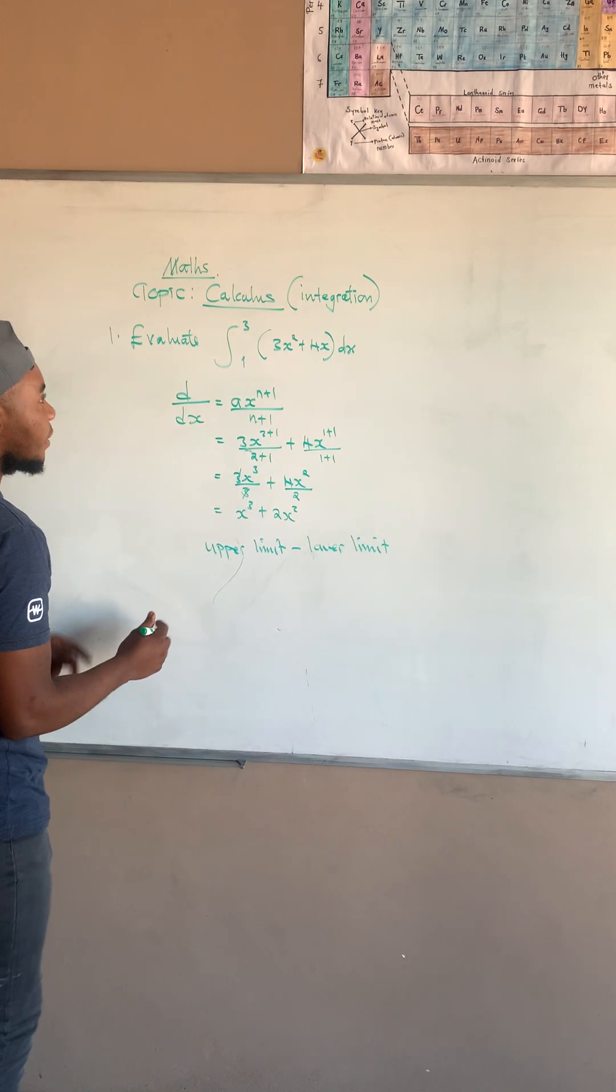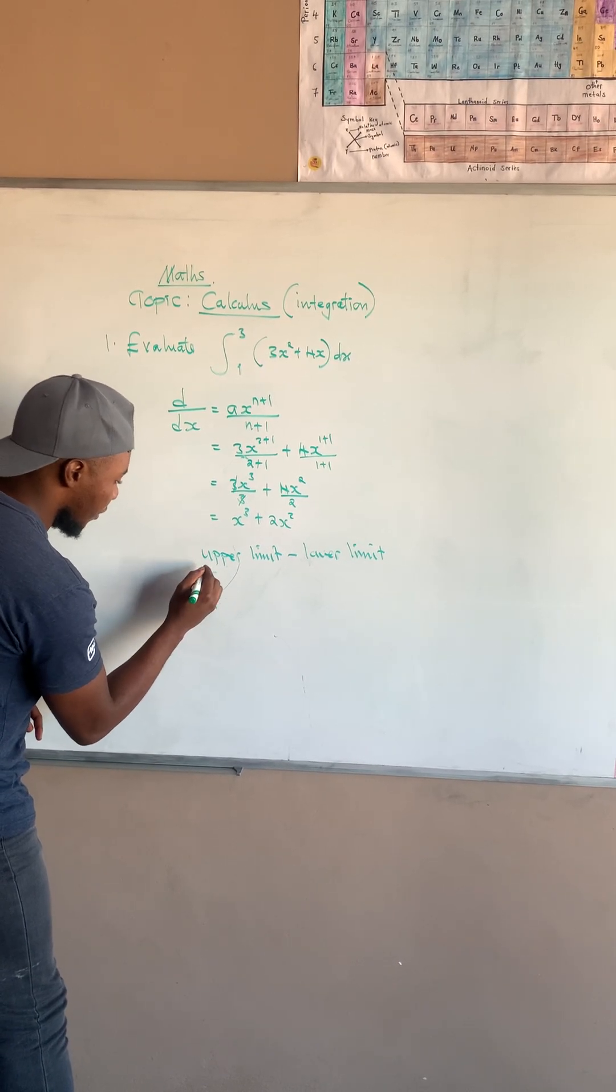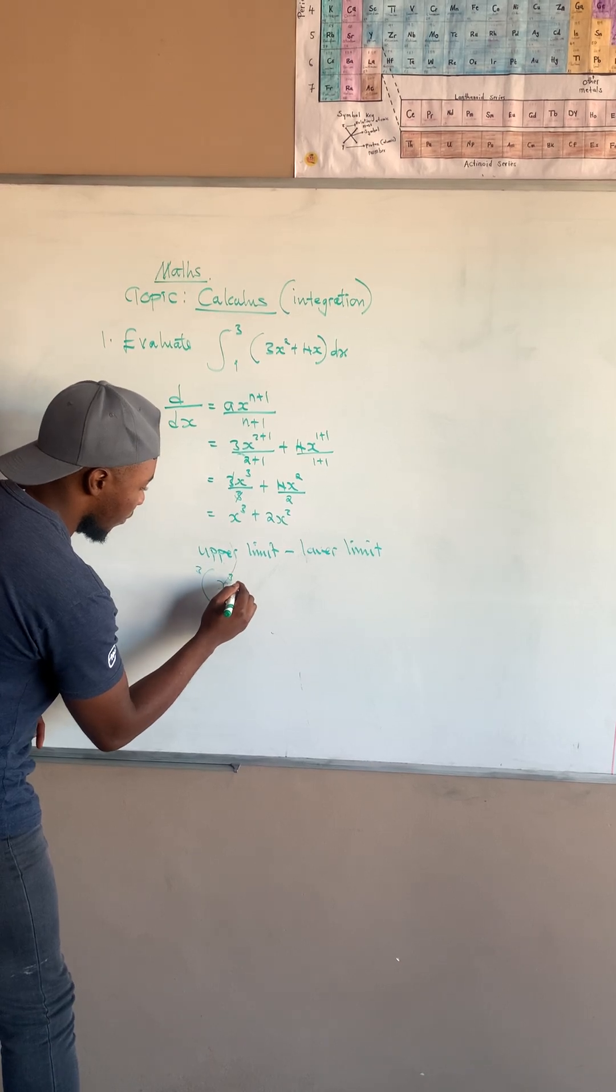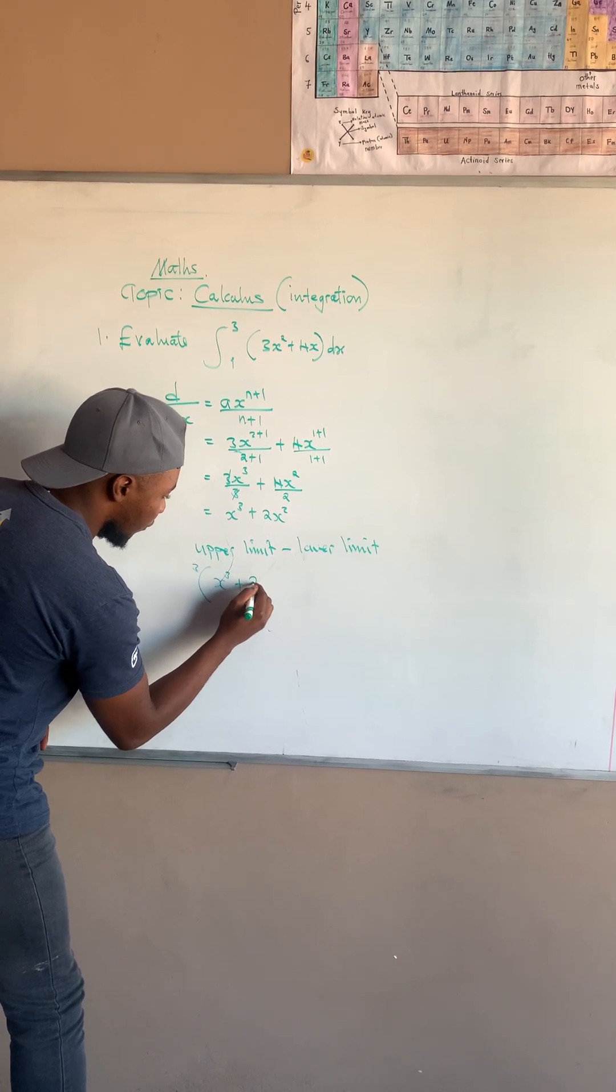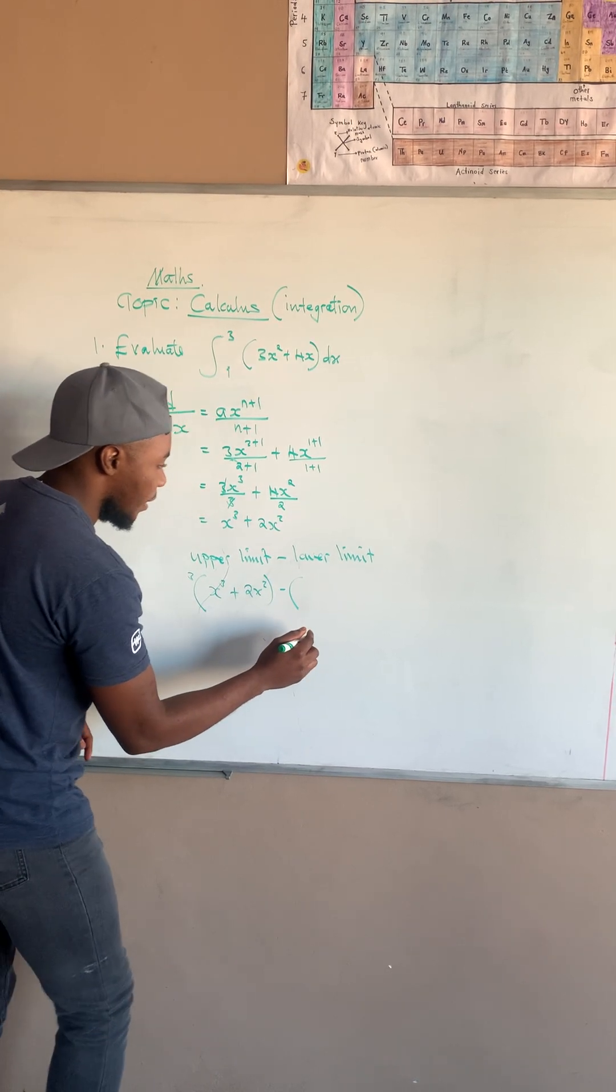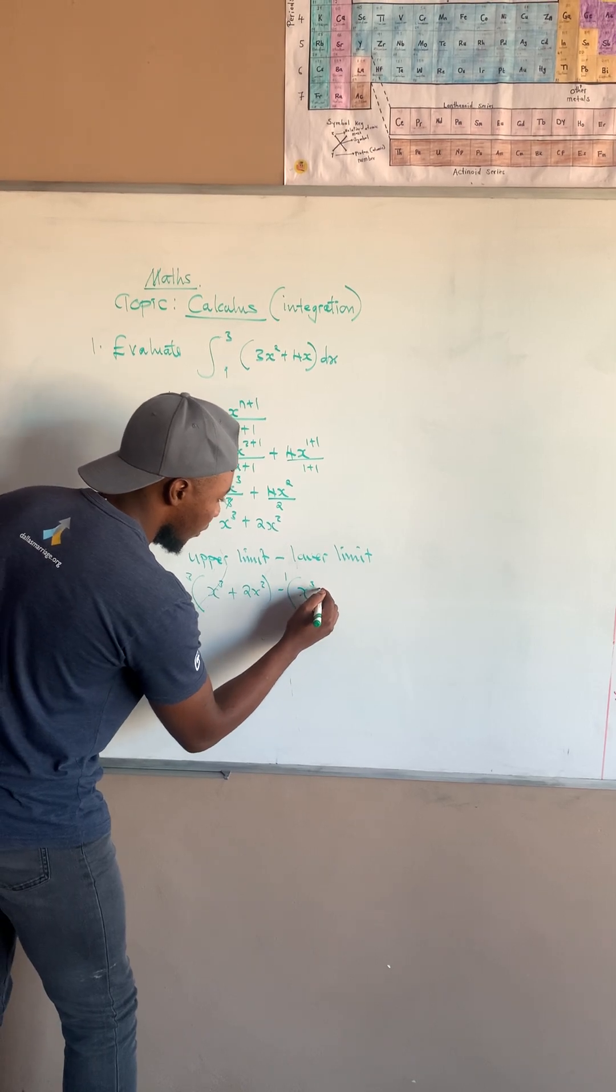Those numbers are very important because after integrating, I'm going to open brackets, then I introduce 3 here in the upper, then I have 3 to the power of this, and then I have 2x to the power of 2, then minus, open bracket, and also I have x to the power of 3. Remember to put 1 there so that you can be remembering what you're supposed to substitute.